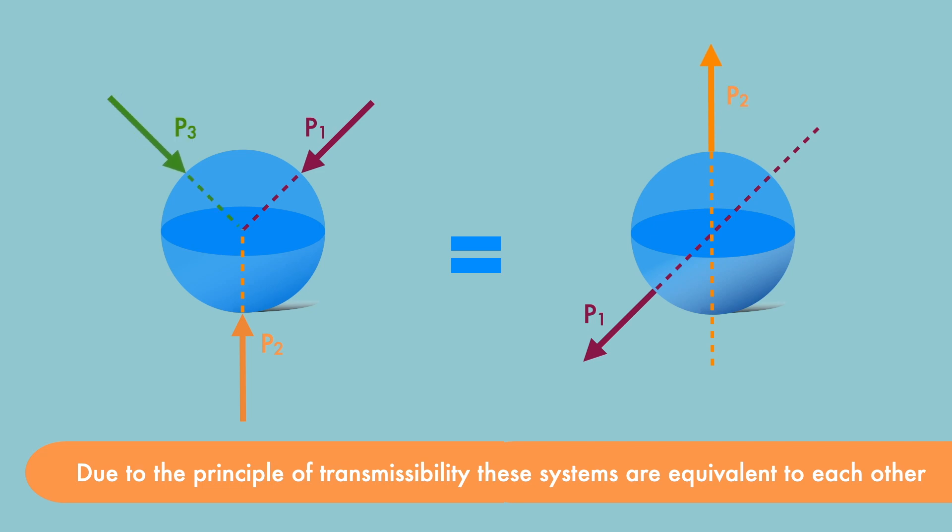Due to the principle of transmissibility, you'll observe that these forces have the same consequences in both cases. As a result, these systems are equivalent to each other.